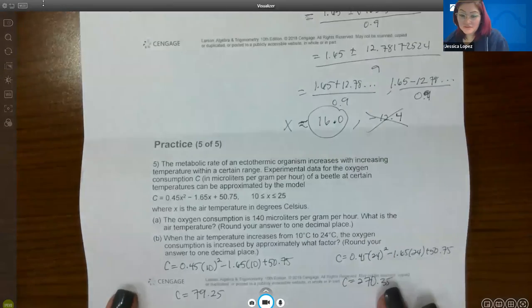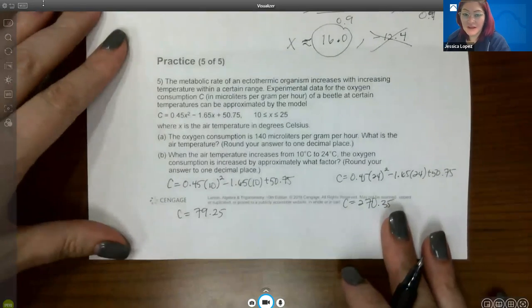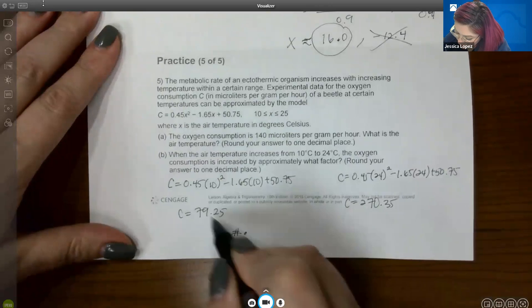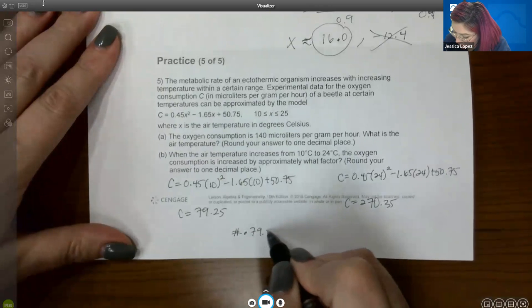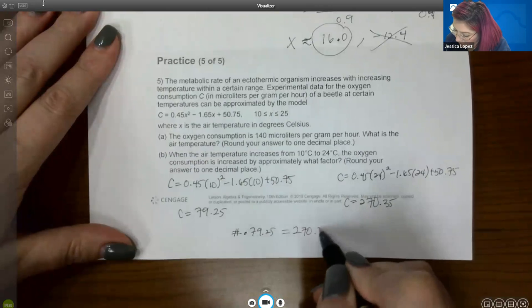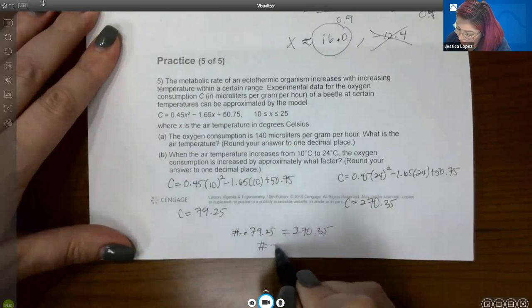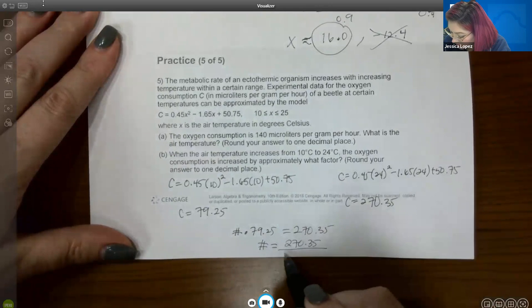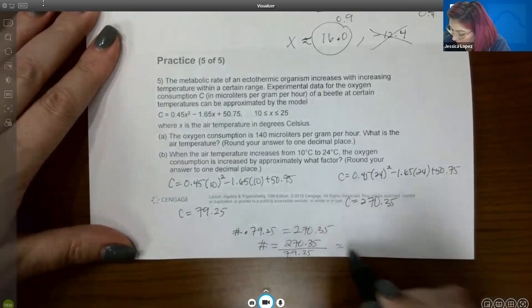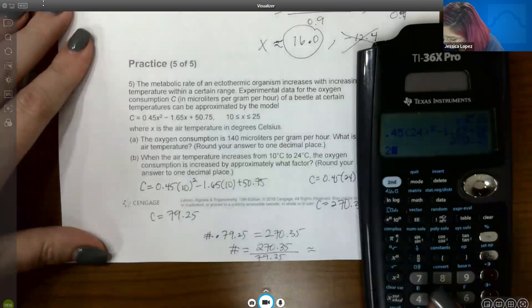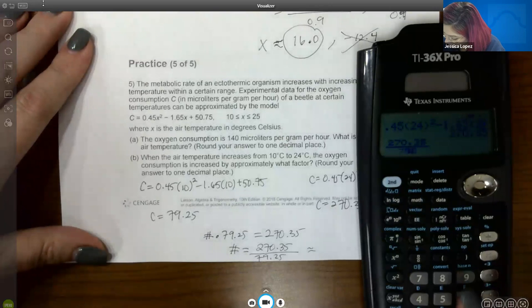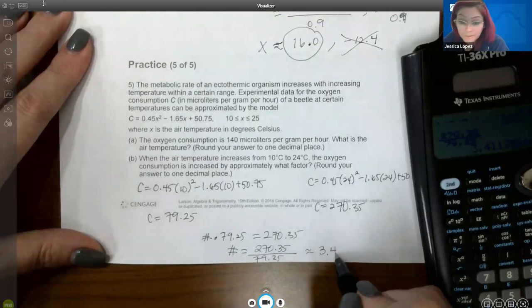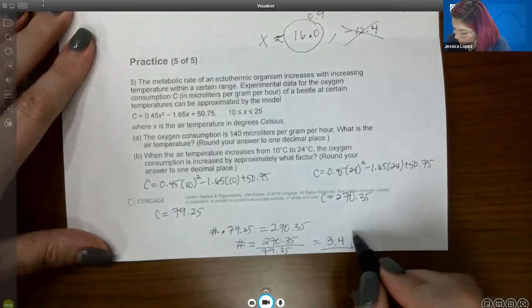Now they want to know what factor. Factor is our key term. Factors are what you get when you multiply. So apparently, they want some number times this 79.25 to equal the 270.35. Well, in order for me to figure out that factor, that number, I'm going to have to take 270.35 divided by the 79.25. And let's see what we get. So 270.35 over 79.25. And we get about 3.4. And so this is the factor that they're looking for.